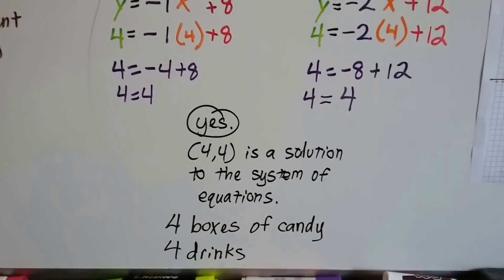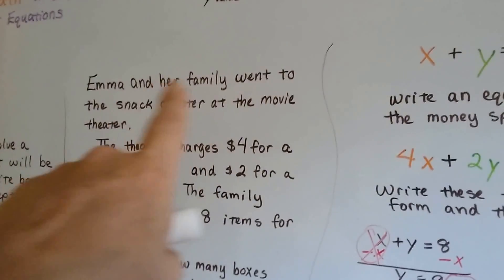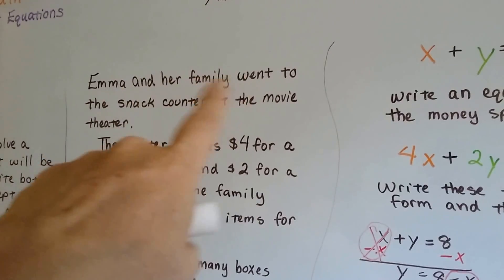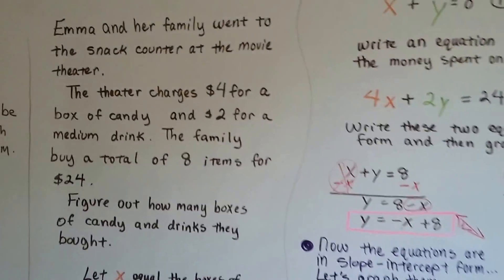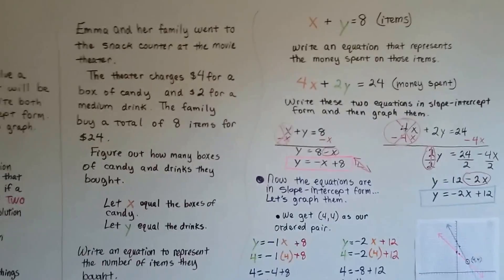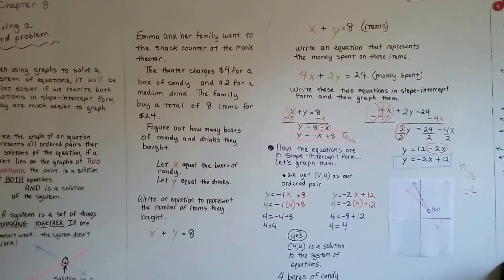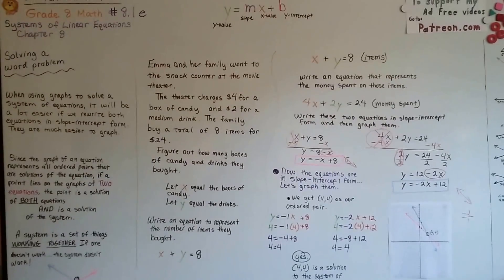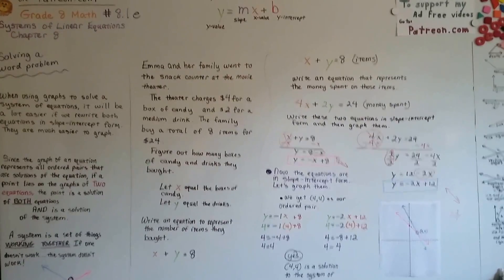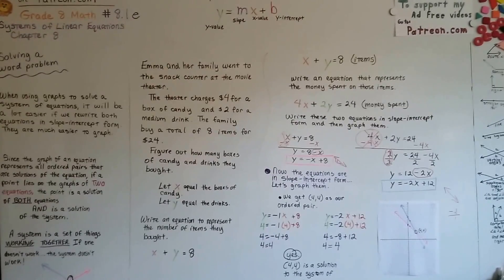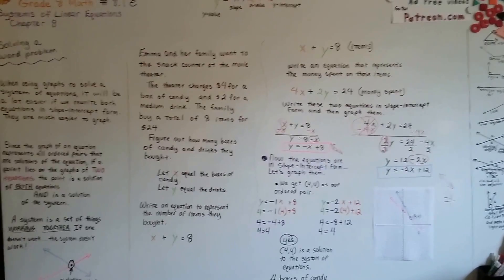They bought four boxes of candy and four drinks. Since Emma went with her family and they got four candies and four drinks, she probably went with three family members — four people total. We're not certain, but we do know that four boxes of candy and four drinks were bought. We're moving on to unit 8.2. Remember that slope-intercept form is easier for graphing — start with the y-intercept and then find the slope. See you in 8.2a!